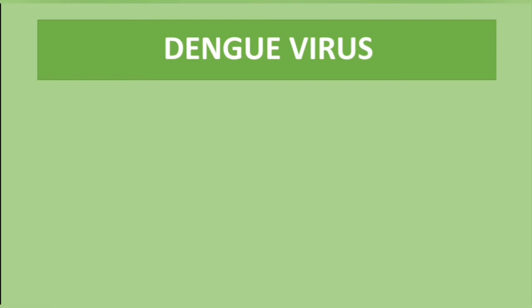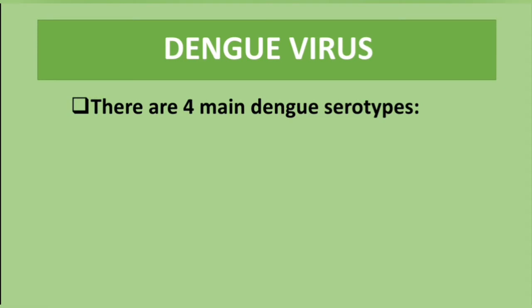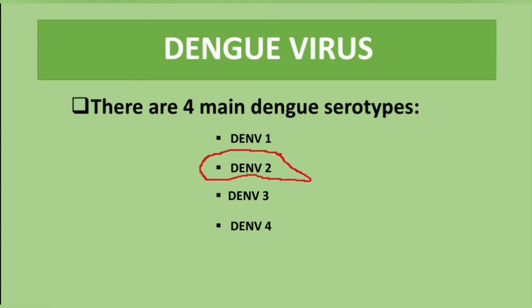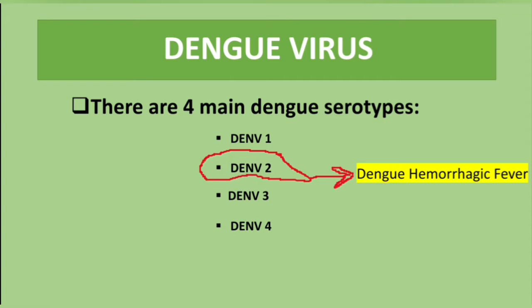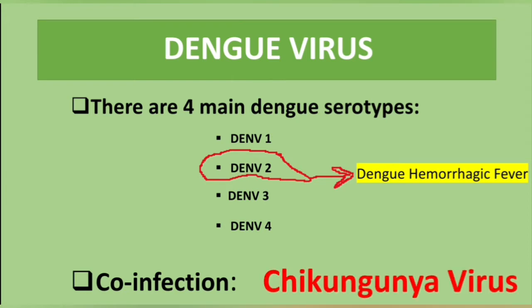There are two important things to remember throughout this video. First, there are four main serotypes of dengue virus: dengue virus 1, dengue virus 2, dengue virus 3, and dengue virus 4. Of these, dengue virus 2 is of great importance because repeated infection by this serotype leads to a complication known as dengue hemorrhagic fever. Second, the dengue virus is usually associated with the chikungunya virus, so in some cases you will find a co-infection of these two.